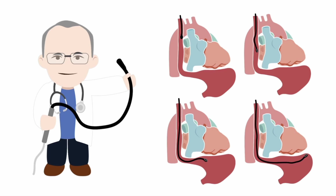The transgastric views are obtained with a TEE probe within the patient's stomach, or in the case of the deep transgastric view, with the probe inserted deeply into the stomach so that its tip is adjacent to the apex of the heart. The aortic views are obtained either with the TEE probe in the upper esophagus to look principally at the aortic arch, or with a TEE probe in the mid-esophageal position but turned 180 degrees so that it faces posteriorly and is able to view the descending thoracic aorta.